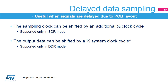Delayed data sampling allows users to compensate for the delay of signals due to constraints on PCB layout optimization. It allows applications to shift the data sampling time by an additional one-half clock cycle when operating in SDR mode. In DDR mode, the output data can be shifted by a one-half system clock cycle to relax hold constraints.